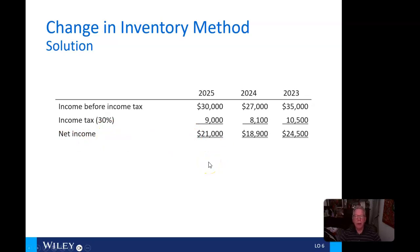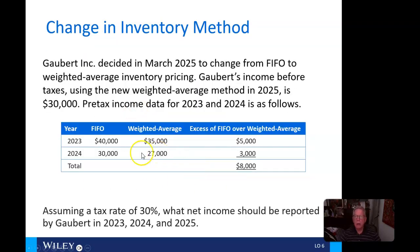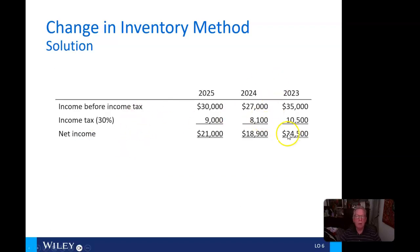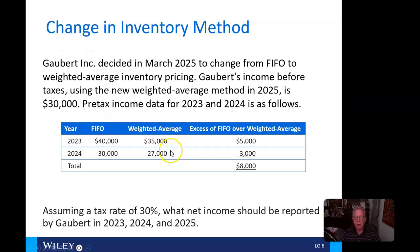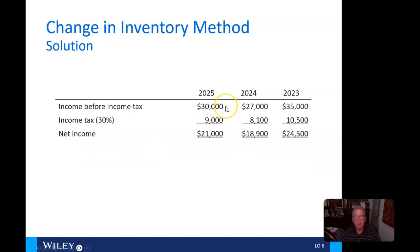Here is the solution. For income before income tax: in 2023, we have $40,000 using FIFO, and here's the weighted average. The excess of FIFO over weighted average is shown for 2024. Here's 2023 income tax, here's 2024 at $27,000, and finally $30,000 for 2025, with the effect of income tax applied. Pretty straightforward.